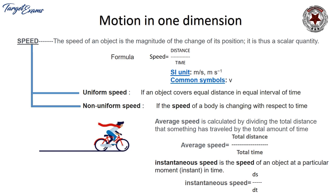Non-uniform speed is categorized into two parts: average speed and instantaneous speed. Average speed is calculated by dividing the total distance traveled by the total time taken. Instantaneous speed is the speed of an object at a particular moment of time, expressed as ds/dt.